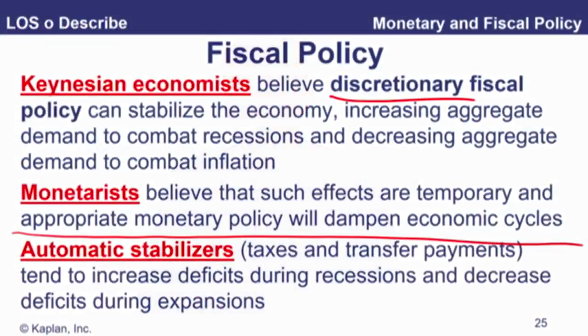You combat recessions by increasing spending, cutting taxes, and vice versa. As opposed to monetarists, who believe that is a temporary kick — don't do it. What you should do instead, according to the monetarist school, is just keep a sensible, predictable, credible monetary policy. That will dampen cycles. You're risking making it worse if you intervene. So fiscal policy is a nice little contrast, and it ties back to business cycles as well.